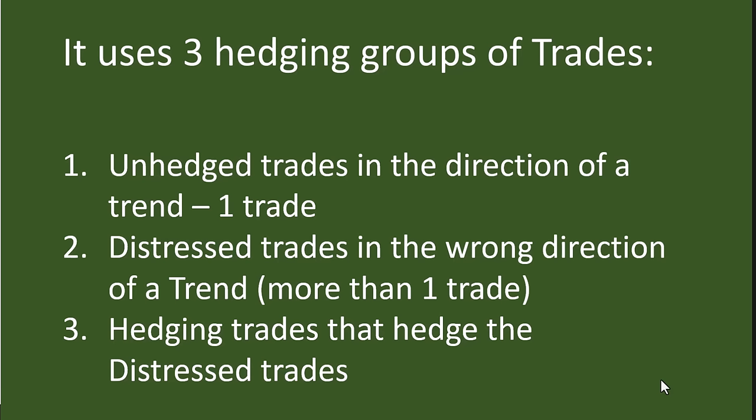The new EA uses three hedging groups of trades. The first is the simple one — an unhedged trade that trades in the direction of the trend, and normally there's only one trade open. Then there are the distress trades — trades that have gone in the wrong direction and have opened more than one trade, so you have a basket of distressed trades. The third are hedging trades that hedge the distress trades. This will all become clear when we see the EA working on a chart and on a trading account.